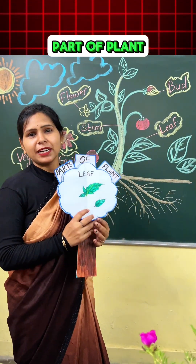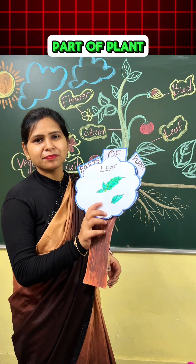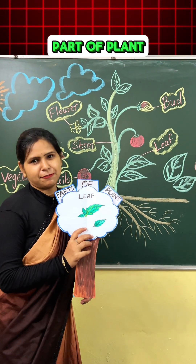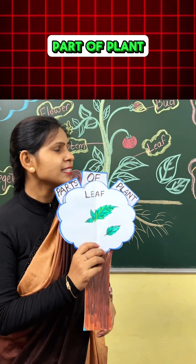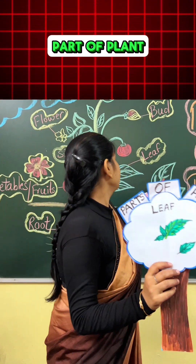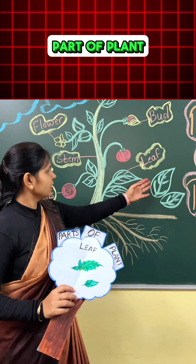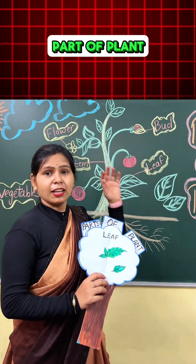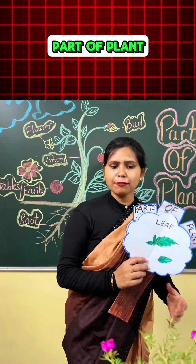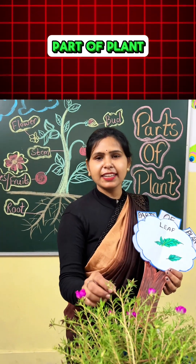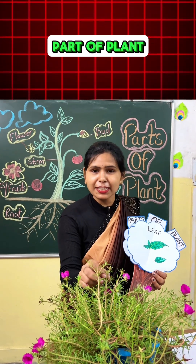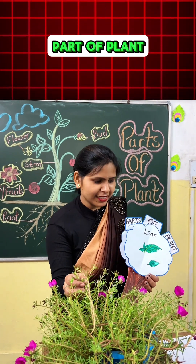And which part is this? This is leaf. Look on the board. This is leaf — green. What is the color of leaf? Green.